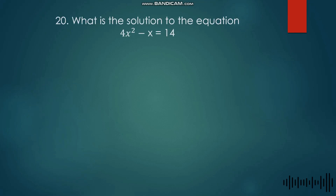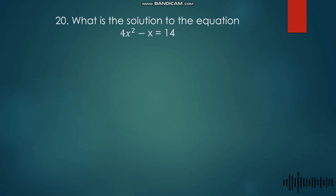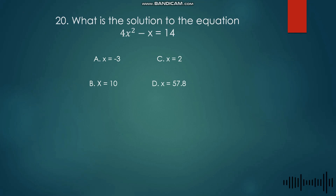Given number 20: What is the solution to the equation 4x squared minus x is equal to 14? Letter A: x = −3, Letter B: x = 10, Letter C: x = 2, and Letter D: x = 57.8.